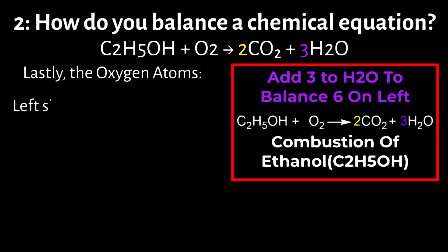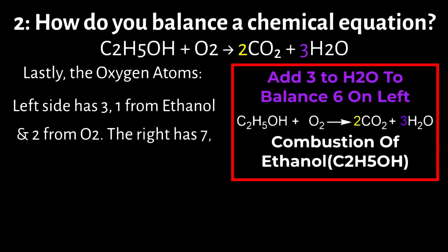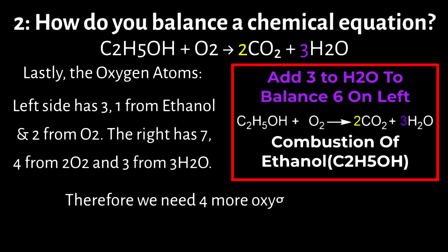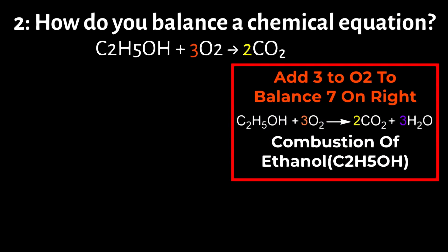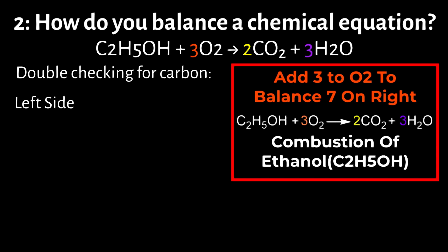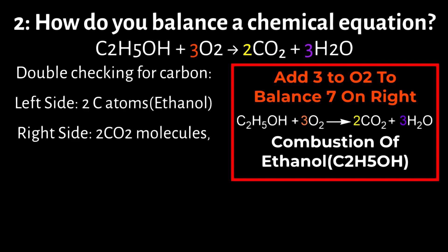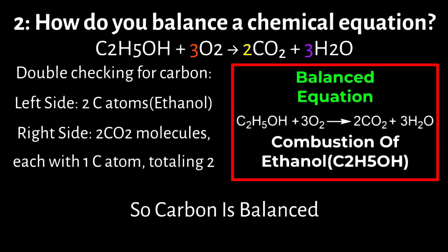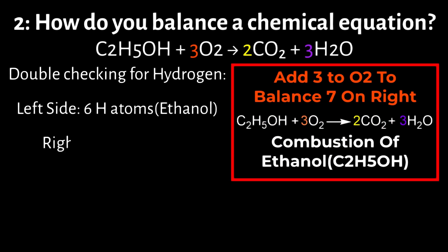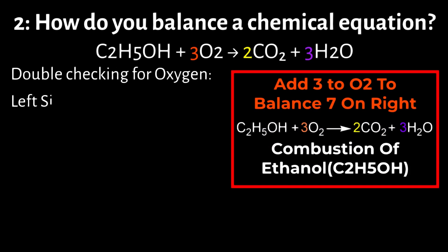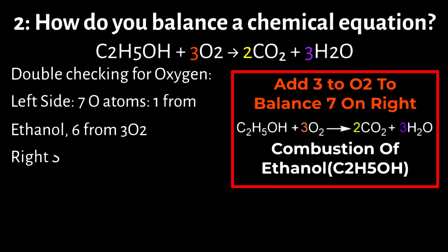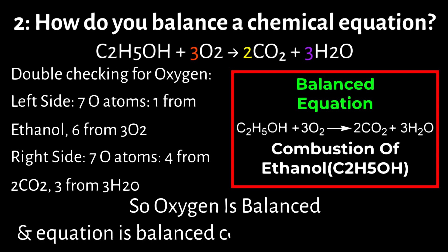Lastly, balance the oxygen atoms. The left side has three (one from ethanol and two from O2), and the right has seven (four from 2CO2 and three from 3H2O). Therefore, we need four more oxygens on the left, which we get by adding a coefficient of 3 in front of O2 to get C2H5OH + 3O2 → 2CO2 + 3H2O. Double-checking: carbon — ethanol has 2 carbons on the left, and two CO2 molecules give 2 carbons on the right, so carbon is balanced. Hydrogen — ethanol has 6 hydrogens on the left, and three H2O molecules give 6 hydrogens on the right, so hydrogen is balanced. Oxygen — ethanol contributes 1 and three O2 molecules contribute 6, totaling 7 on the left; two CO2 give 4 and three H2O give 3, totaling 7 on the right. The equation is balanced correctly for all elements.